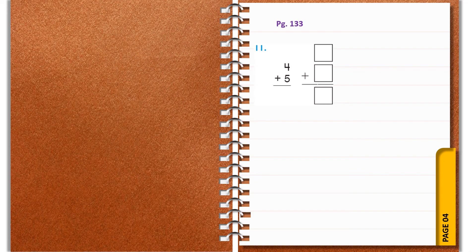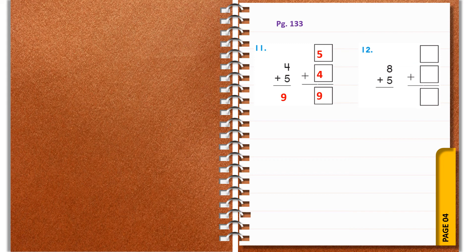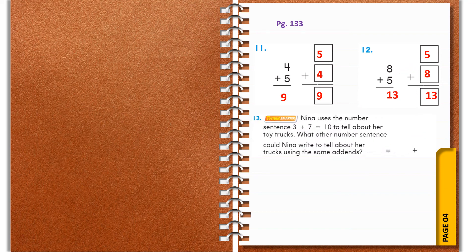Eleventh question: four plus five equals nine. Change the order — five plus four should give you the sum nine. Twelfth question: eight plus five equals thirteen. Change the order — five plus eight is again equal to thirteen.